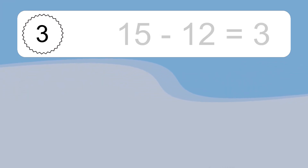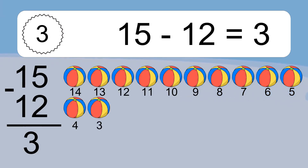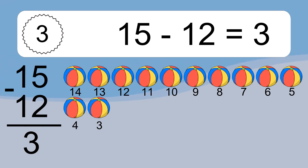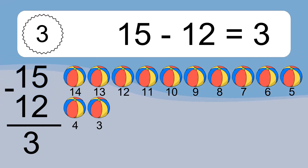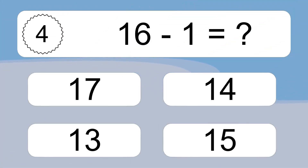15 minus 12 equals what? 15 minus 12 equals 3. Let's count it: 14, 13, 12, 11, 10, 9, 8, 7, 6, 5, 4, 3.